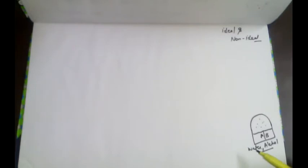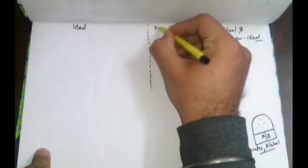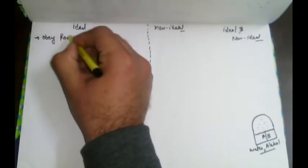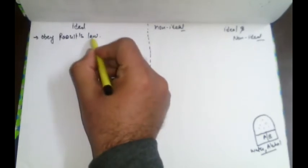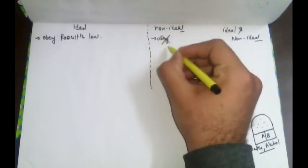If a solution obeys Raoult's law under all temperatures and concentrations, we call it an ideal solution. There are a few characteristics which can easily identify whether a solution is ideal or non-ideal. The first characteristic is that it must obey Raoult's law — if it obeys Raoult's law, we call it an ideal solution. If it does not obey Raoult's law, we call it a non-ideal solution.